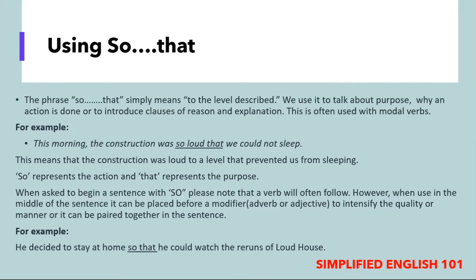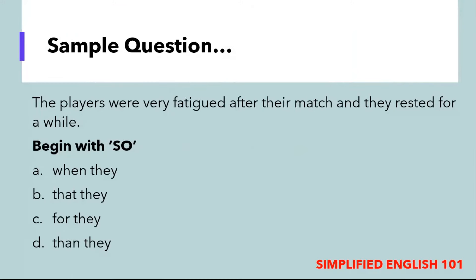Let us look at an example of how to use so and that. The sentence reads: 'The players were so fatigued after their match and they rested for a while.' The instruction says to begin the sentence with so. The options are: when they, that they, for they, than they. Remember, when beginning a sentence with so, a verb will follow; if used in the middle, it can be placed between an adverb or adjective. We reconstruct the sentence as: 'So fatigued were the players after the match that they rested for a while.' The option selected is 'that they.'